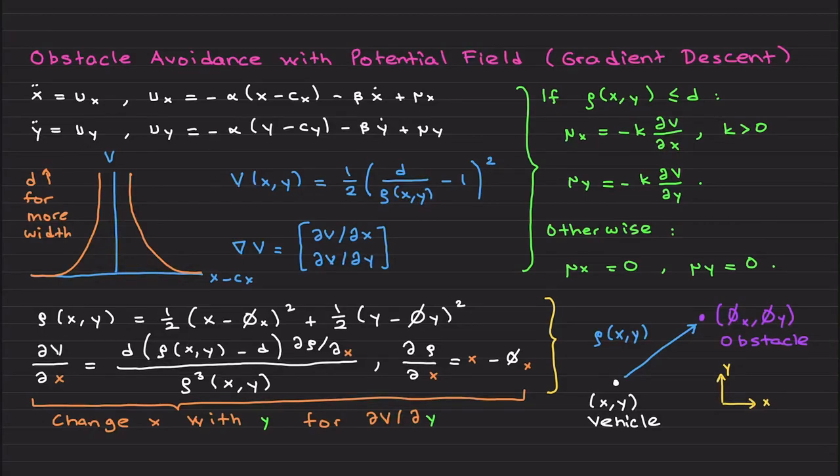Welcome back. So let's do a MATLAB example for obstacle avoidance with potential field, which is another application of gradient descent.